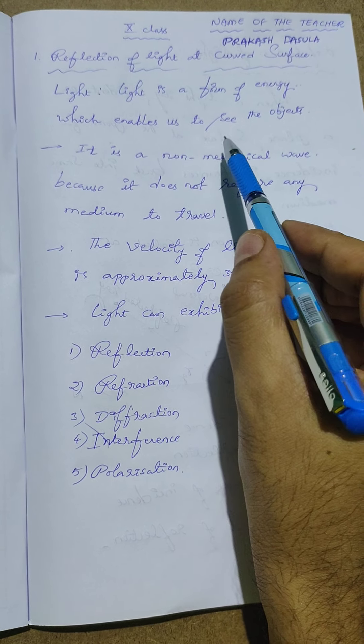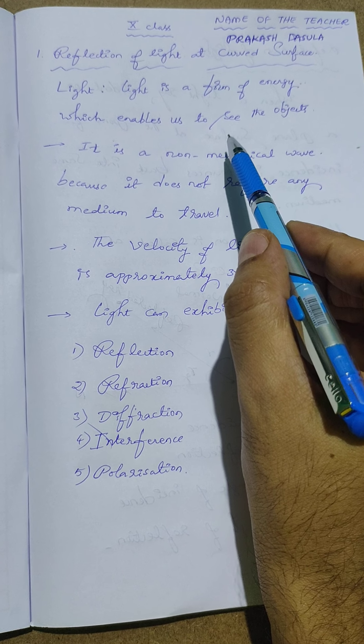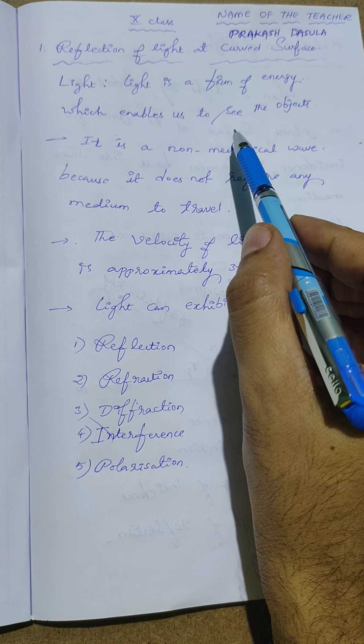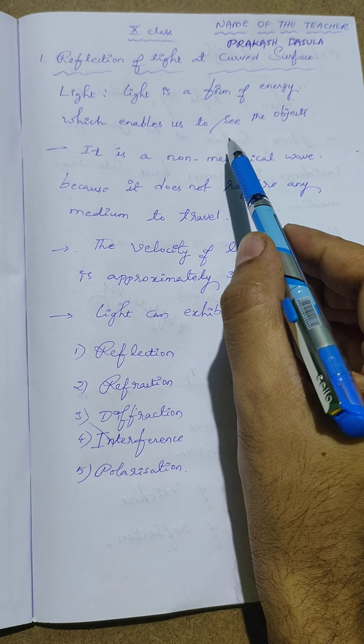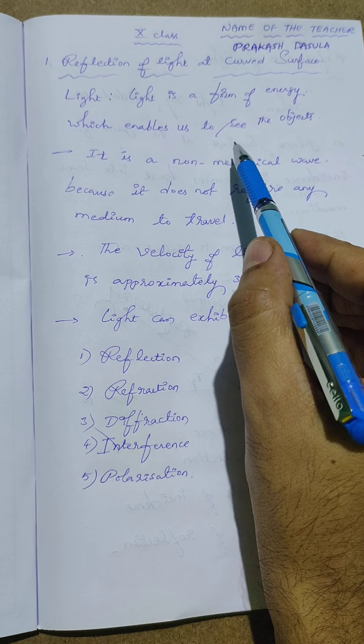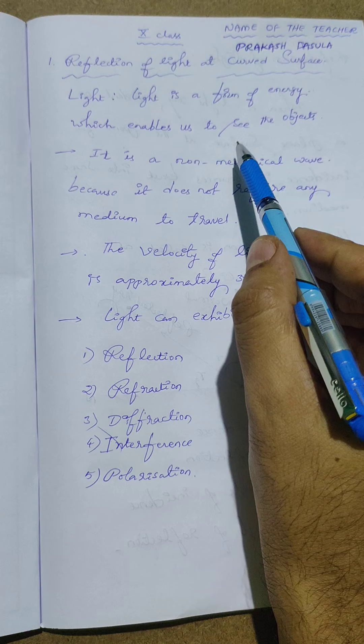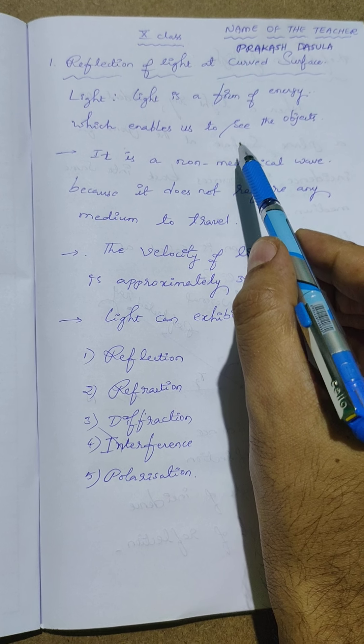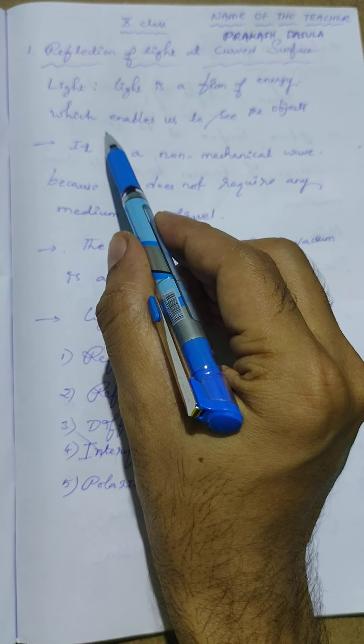For example, if we enter into a dark room, can we be able to see any object? No. So without help of light we cannot see any object. In absence of light we cannot see any object.